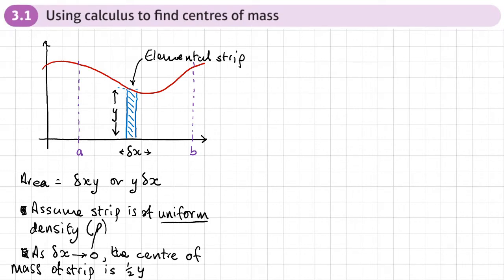There are a couple of things to say about this strip. First, we're going to assume that the elemental strip is of uniform density. We'll use the Greek letter rho to stand for the density, and its units are mass per unit area.